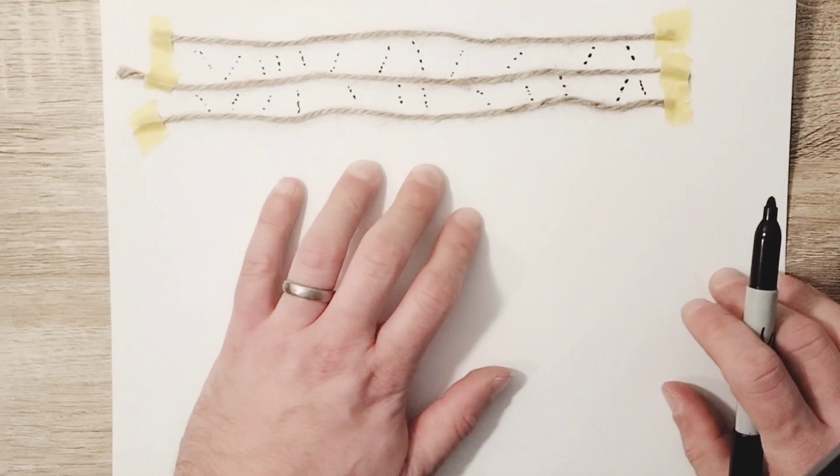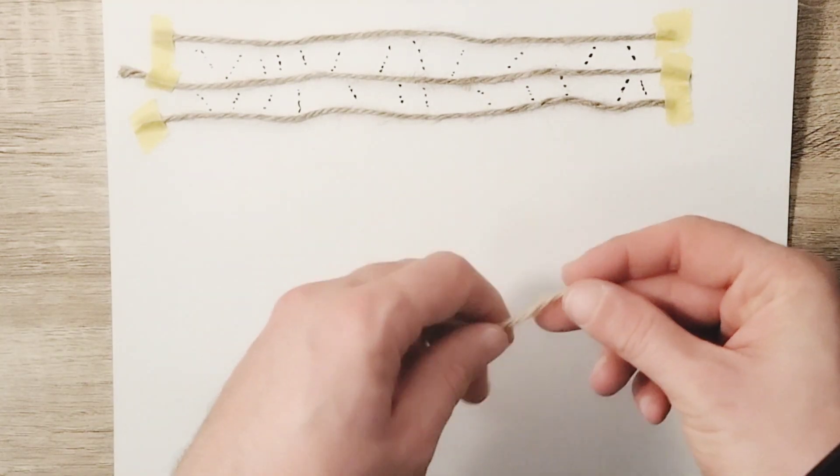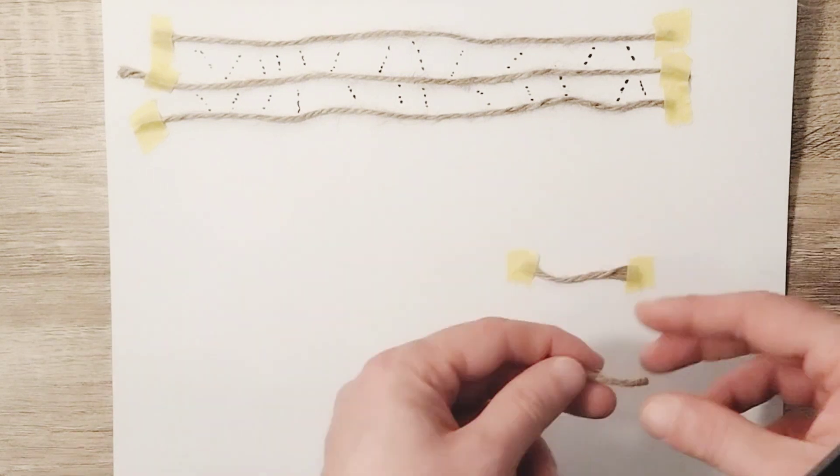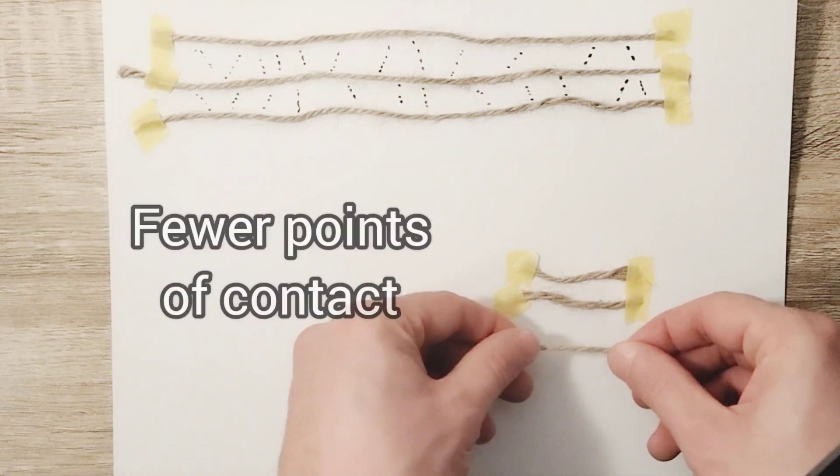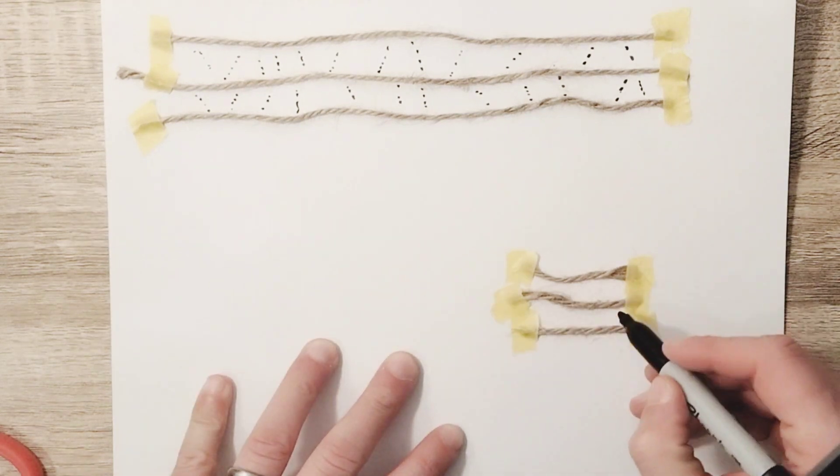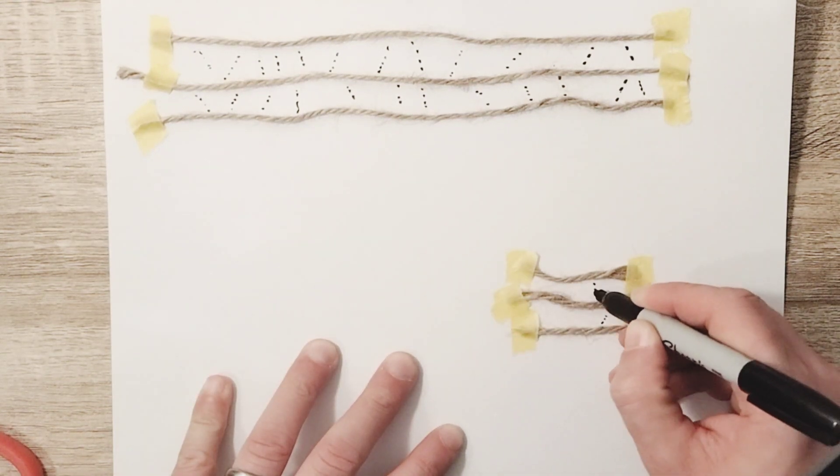Let's contrast this against short-chain hydrocarbon molecules represented by a shorter piece of string. What you'll notice is there's a much smaller surface area and many fewer points of contact along these much shorter chains for the formation of London dispersion forces.